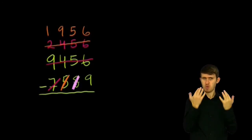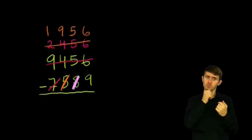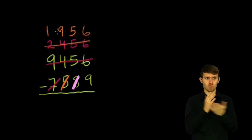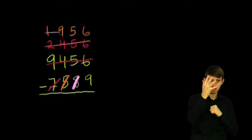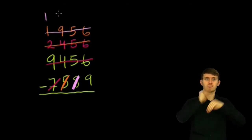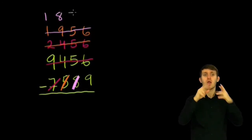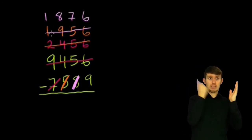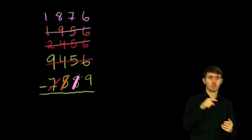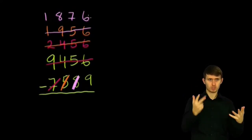Well, 195 minus 8, let's see, 15 minus 8 is 17. So 195 minus 8 is going to be 187. And then you still have the 6 there. So essentially I said, 1956 minus 80 is 1876.